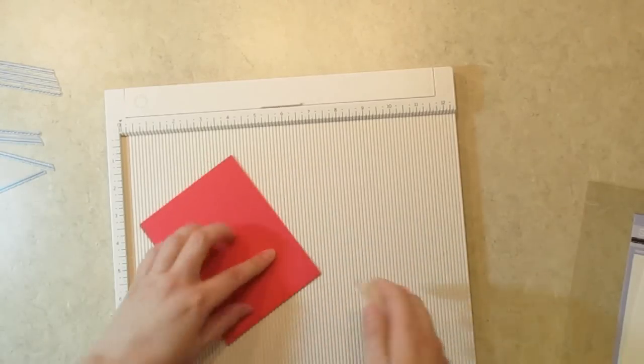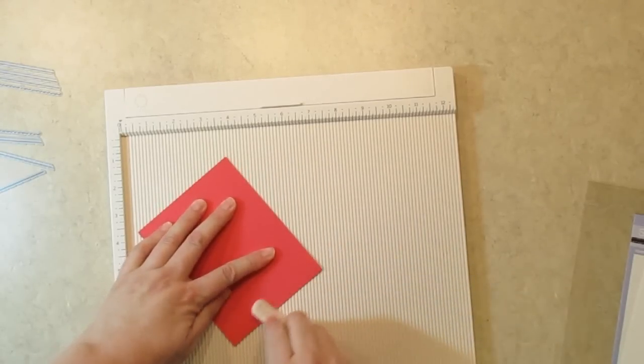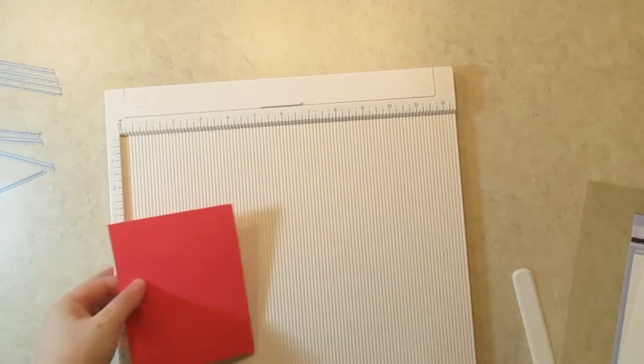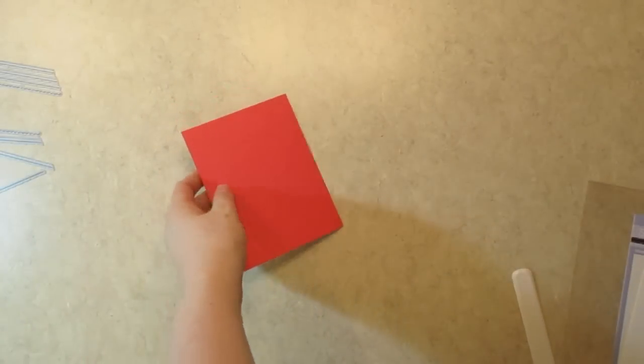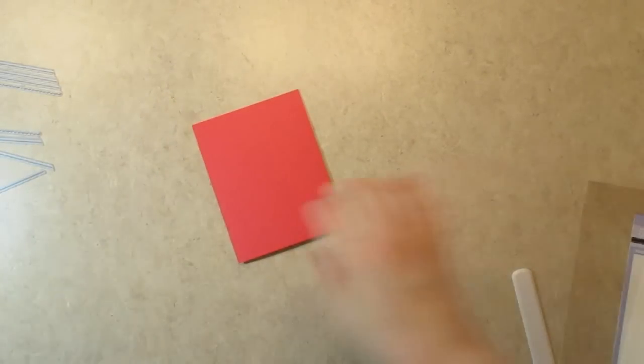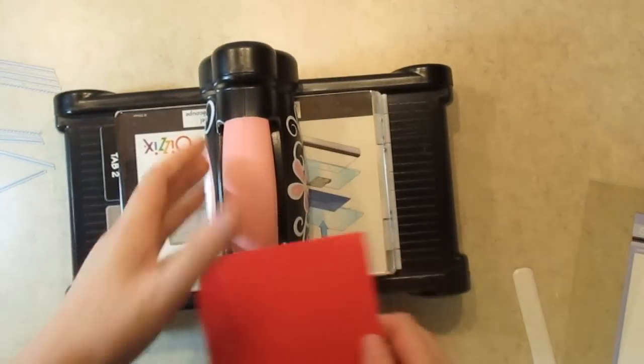So I'll use that same bone folder to make sure it's nice and flat. And then I'm going to pull out my Sizzix Big Shot to cut out the die.